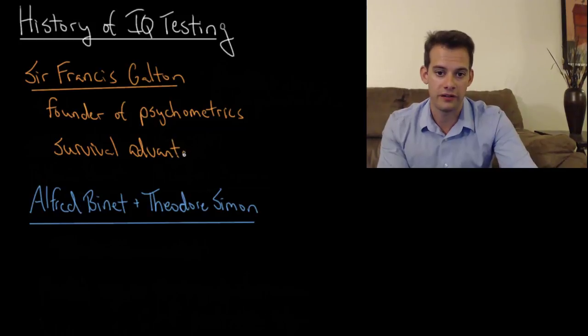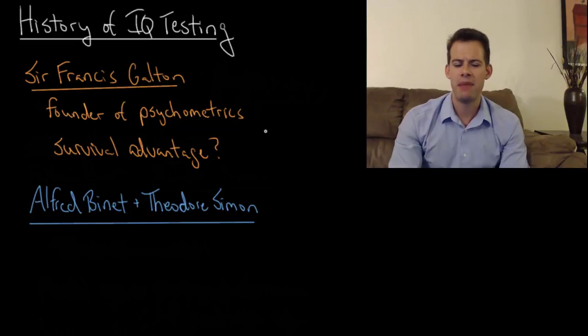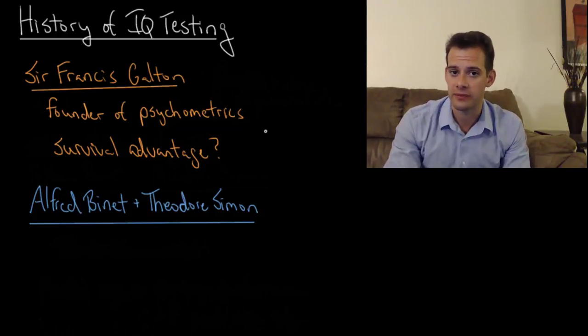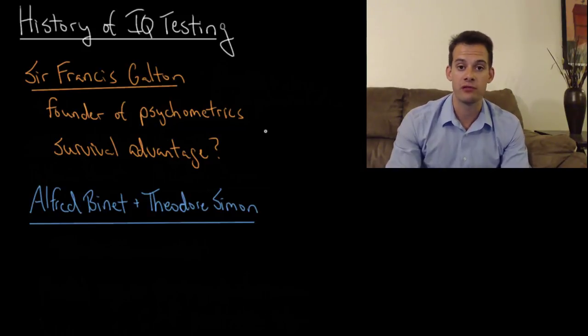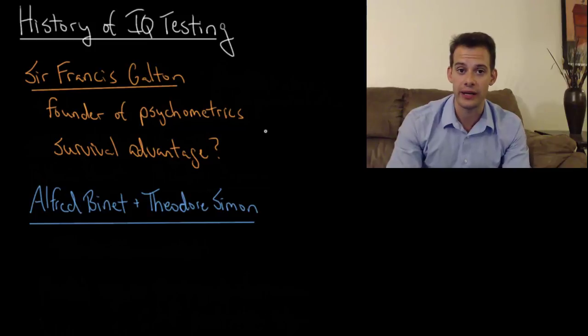Galton figured if intelligence provides some sort of survival advantage then maybe it can also be seen in certain body measurements. Maybe there's something about this survival advantage that shows itself in other ways. And so Galton measured all sorts of features of people. He measured their reaction time, their sensory acuity, their muscular power, their body proportions, and even their head size and attempted to connect these to intelligence. But unfortunately he wasn't able to find any particularly strong correlations between these measurements and intelligence.